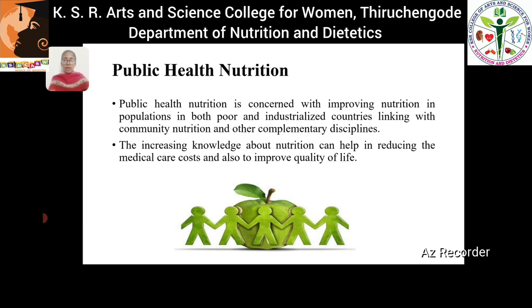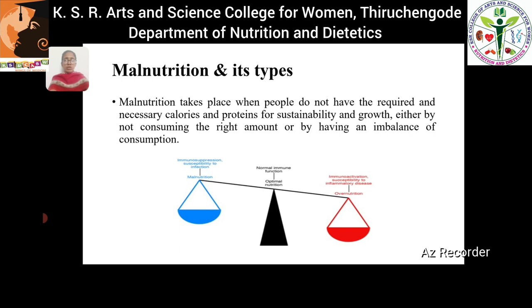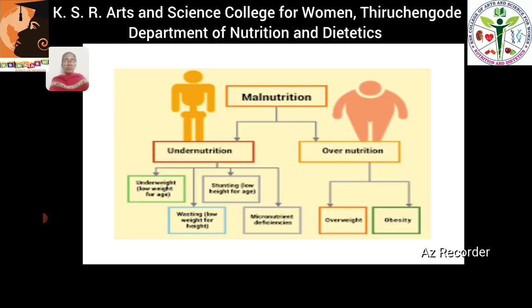If there is a lack of public health nutrition, that leads to malnutrition and other kinds of diseases. Malnutrition takes place when people do not have the required calories and proteins for sustainability and growth, either by not consuming the right amount of food or through imbalanced food consumption. There are two types of malnutrition: undernutrition and overnutrition. Undernutrition is broadly classified into four types: underweight (low weight for age), wasting (low weight for height), stunting (low height for age), and micronutrient deficiencies. Overnutrition is classified into overweight and obesity.